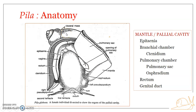Now coming to the mantle or mantle cavity. The mantle is otherwise known as the pallium. The mantle is a loose skin fold that covers the entire visceral mass and part of the head as a protective covering. The mantle is responsible for secreting the shell. The anterior margin of the mantle is thick and fleshy and contains shell-secreting glands, which secrete the periostracum and ostracum of the shell.